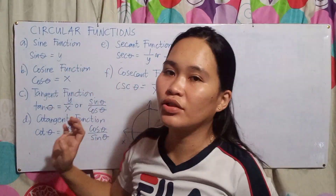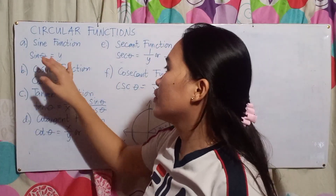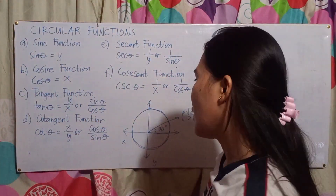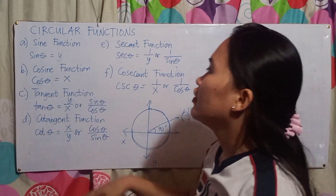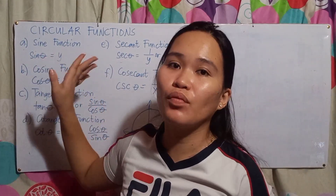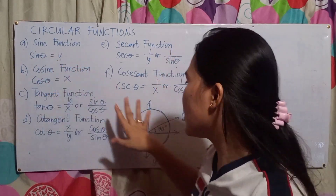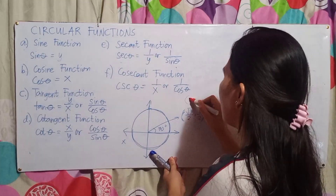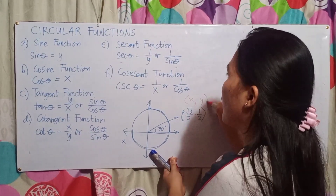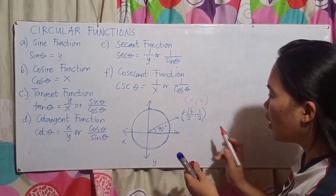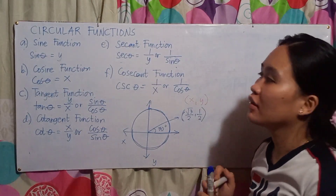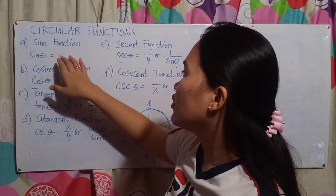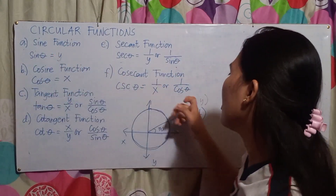For the sine function, sine theta — theta represents the degrees of the unit circle. So, sine theta equals y. In the unit circle, the ordered pair is (x, y) or (cosine, sine). So the sine function represents the y value.